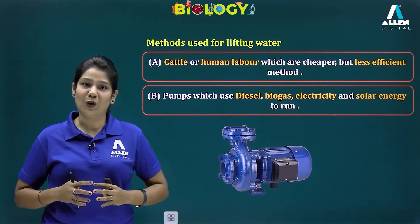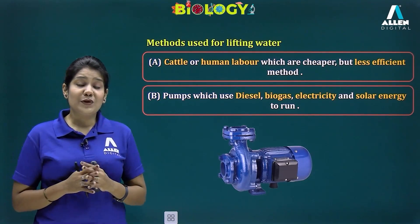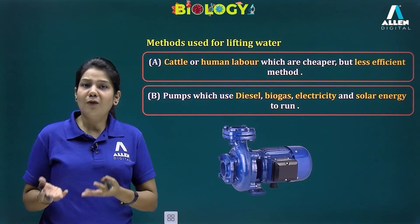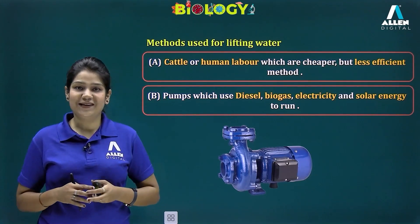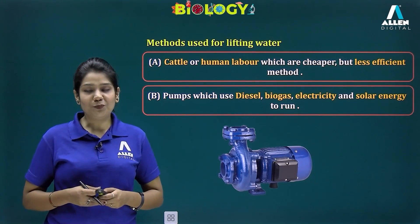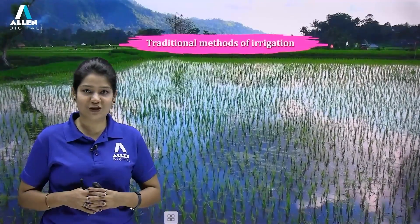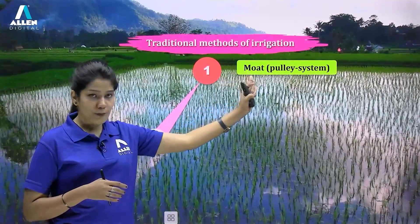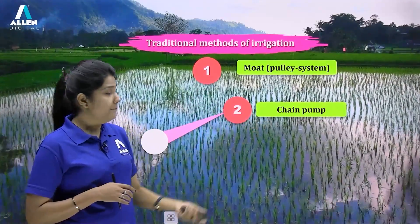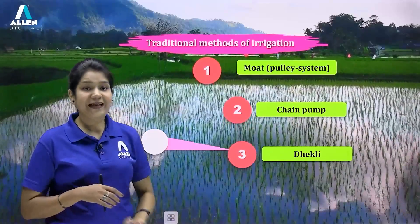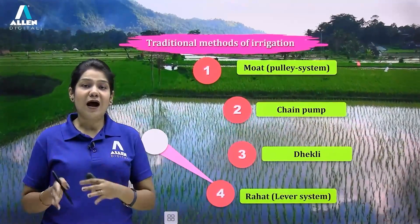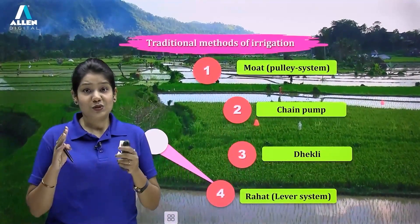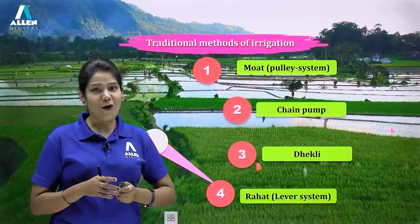Having discussed the importance of irrigation and the sources of water, we now proceed to the traditional methods of irrigation, which involve four methods: the first is the moat or pulley system, the second is the chain pump, the third is the dhekli, and the last is the rahat or lever system. We are going to discuss them one by one in detail.